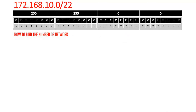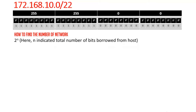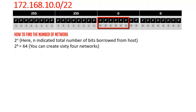Now let's find the number of networks. The formula is 2 to the power n, where n indicates the total number of bits borrowed from the host. We have borrowed 6 bits, so the number of networks is 2^6, which equals 64. That means you can create a total of 64 networks from this address.